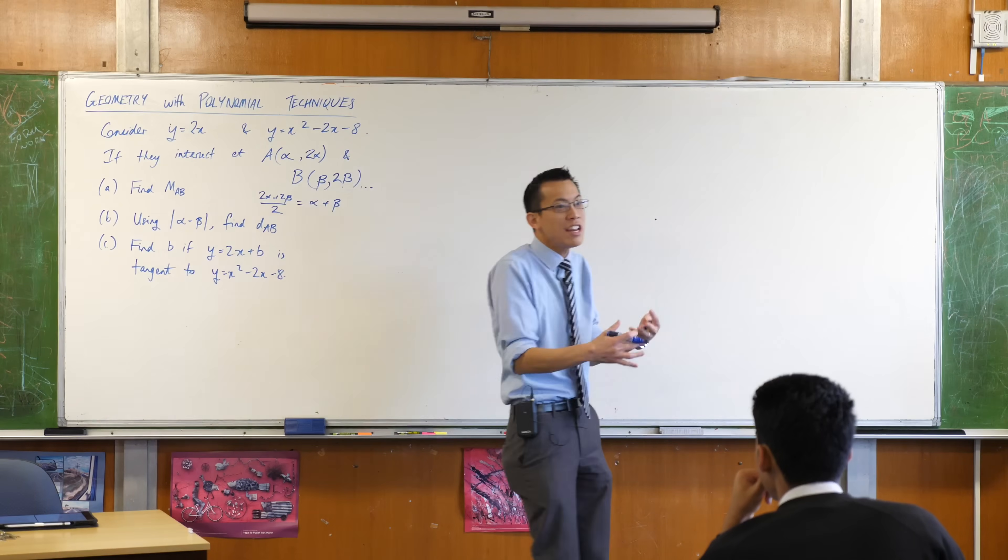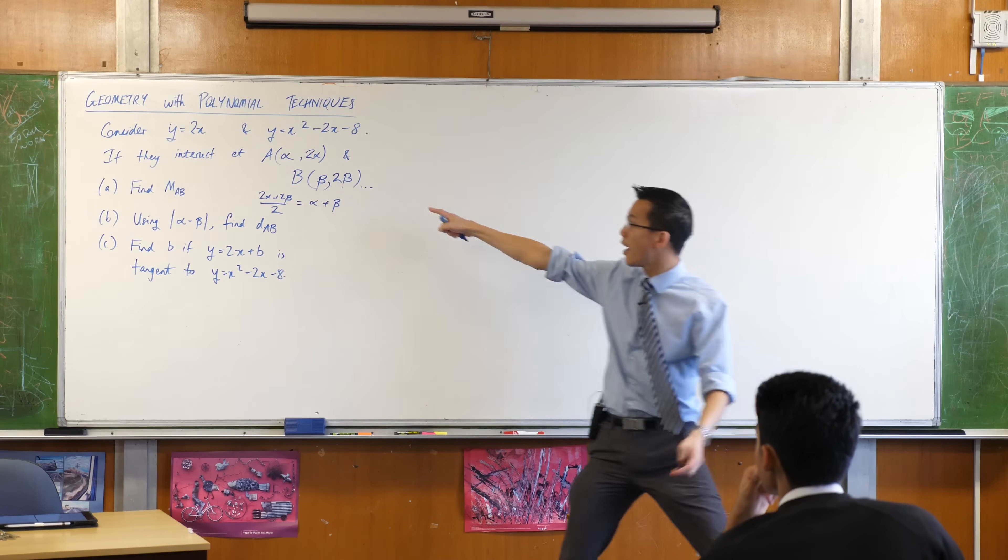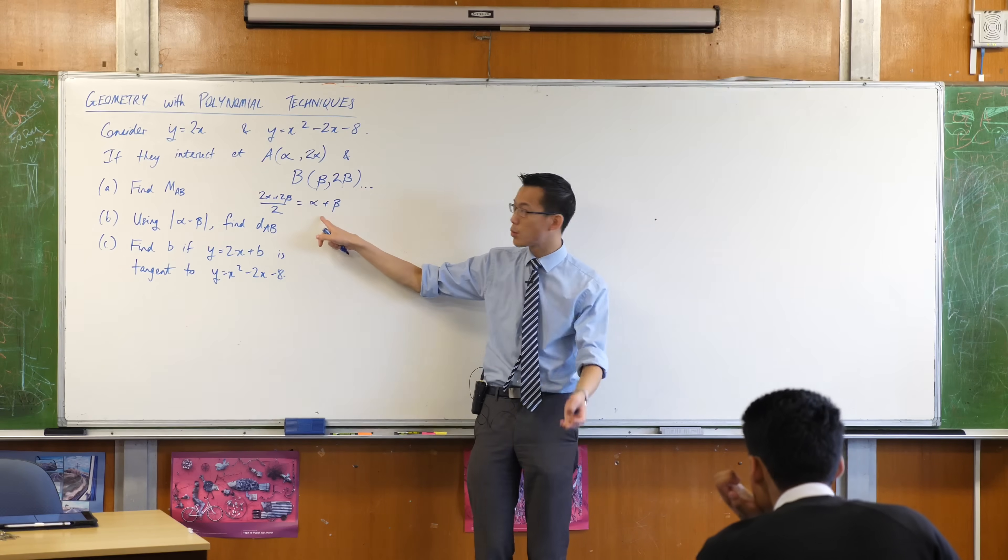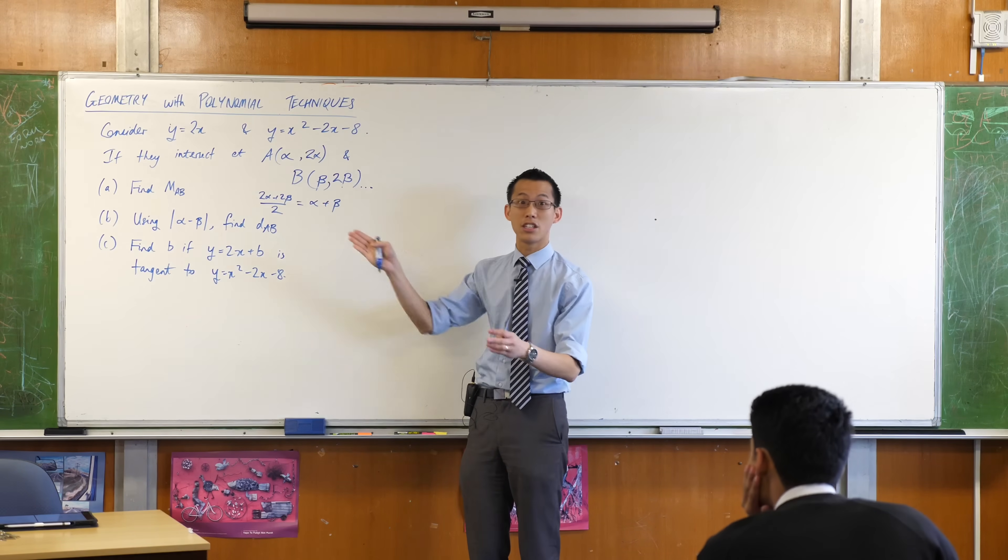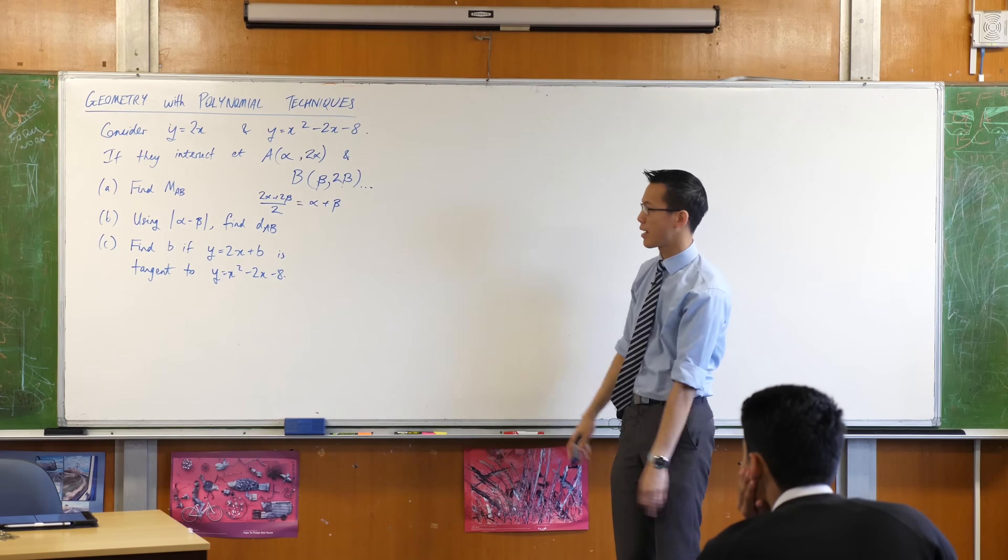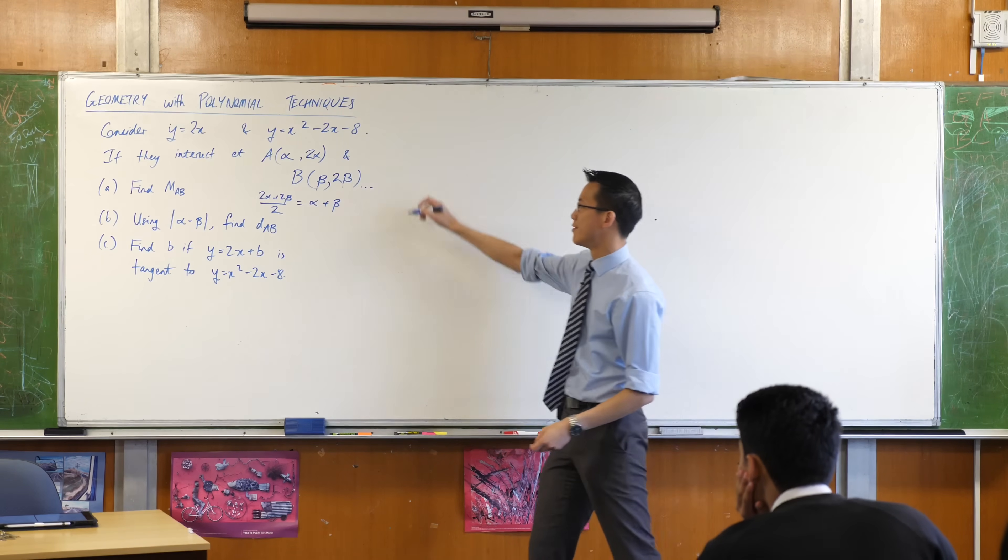Do you see just by using this sum of roots result, I can go immediately to the y coordinate? I didn't even need to know what the y coordinates of these things are. Remember I mentioned why do we care about these things? Sometimes we want to get these results without having to go through what are alpha and beta in the first place, and this is a perfect example.